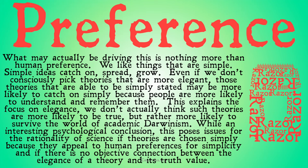They're more likely to become popular, more likely to be talked about on the news, and therefore more people are likely to understand them. While an interesting psychological conclusion, this poses issues for the rationality of science if theories are chosen simply because they appeal to human preferences for simplicity, and if there's no objective connection between the elegance of a theory and its truth value. If all elegance is is a way to make sure that your theory gets published, gets notoriety, or gets picked up by other humans, elegance may be an important feature of a theory, but it has nothing to do with that theory's truth value. Rather, it has to do with the ability of that theory to self-propagate throughout humans and become more convincing.